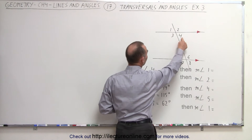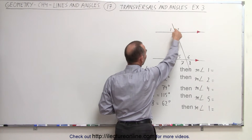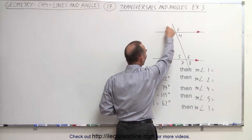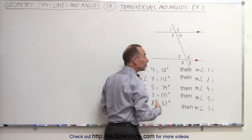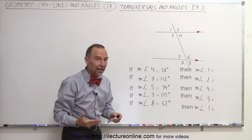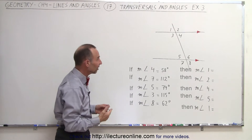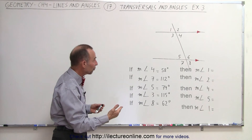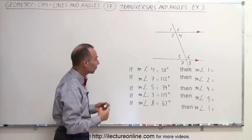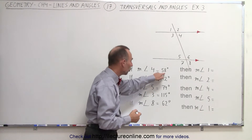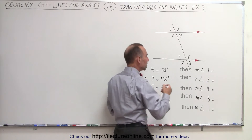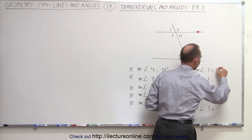Here we have angle four and here we have angle one. These are opposite angles, and we know that opposite angles must have the same measure. Therefore, the measure of angle one must also equal 58 degrees.